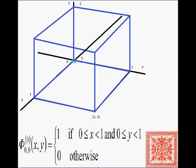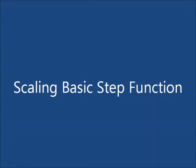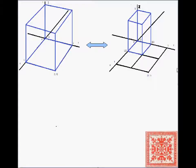This is the basic step function, or scalar, that we briefly discussed in the previous broadcast. There's a unit square on the x and y dimensions, and it has a unit height in the z dimension. It maps the value of x and y to one — it's a three-dimensional picture but technically two-dimensional because we're dealing only with x and y.